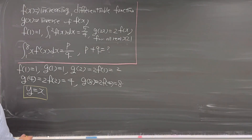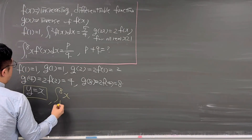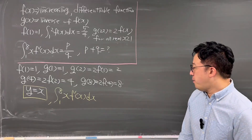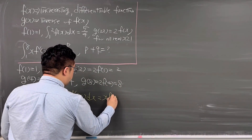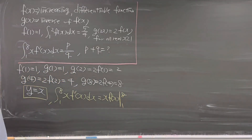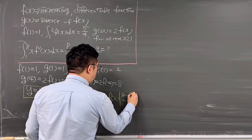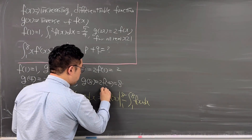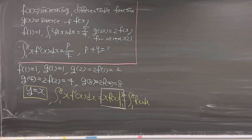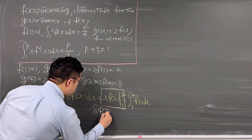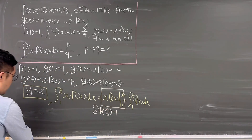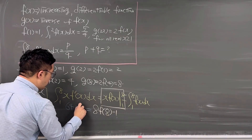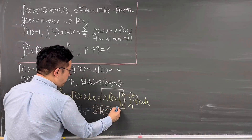Now let's evaluate the integral from 1 to 8 of x·f'(x)dx. Using integration by parts, this equals x·f(x) evaluated from 1 to 8, minus the integral from 1 to 8 of f(x)dx. The first term is 8·f(8) − 1·f(1) = 8·8 − 1 = 64 − 1 = 63. So the first term equals 63.